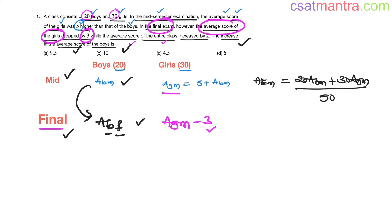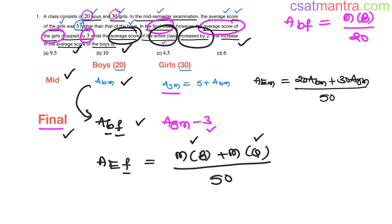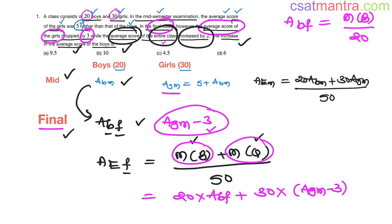To find this, there is a hint given: the average score of the entire class increased by 2 in the final examination. So the average score of the entire class in the final examination equals marks of boys plus marks of girls in the final examination, divided by 50. Marks of boys in final is 20 times ABF, and marks of girls in final is 30 times (AGM minus 3), by 50.